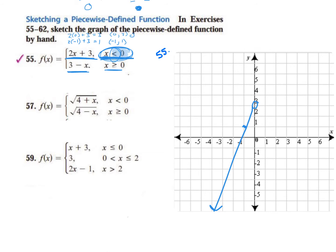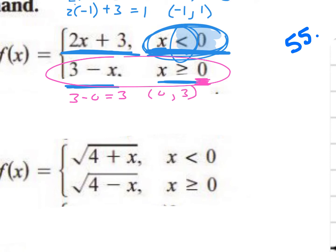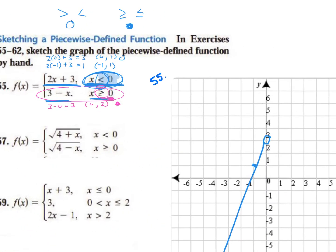So I just graphed my first piece. Let's move on to the second. What's the first value I should plug into my second piece? 0 — I always want to plug in whatever number it gives me. So I have 3 minus 0 is equal to 3. I plugged in 0 and got 3 — that's my first point for the second piece. Do I have an open or closed circle at this point? Closed. This one has a greater than or equal to sign; the equal to means that it's closed. So I go to 0, up 3, put a closed circle.